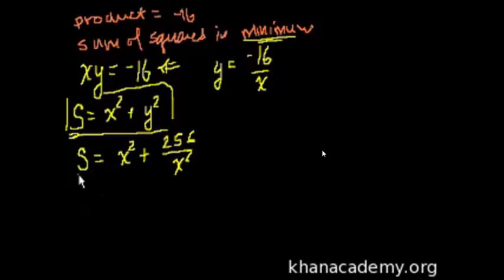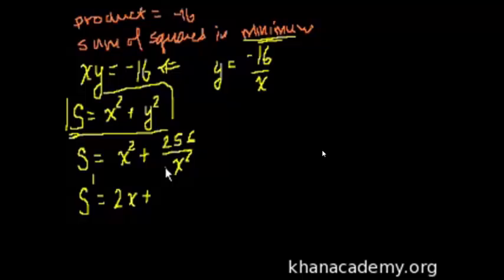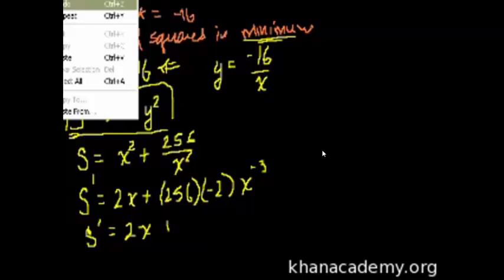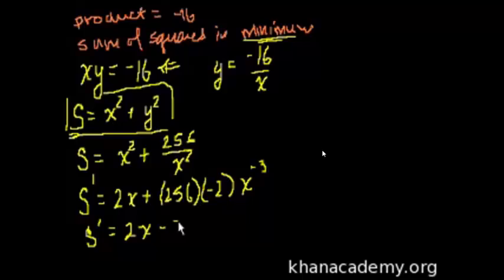Taking the derivative with respect to x, s prime equals 2x plus the derivative of 256 times x to the negative 2. That gives us 256 times negative 2, times x to the minus 3. So the derivative is equal to 2x minus 512 times x to the minus 3.